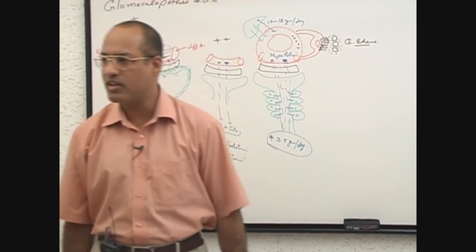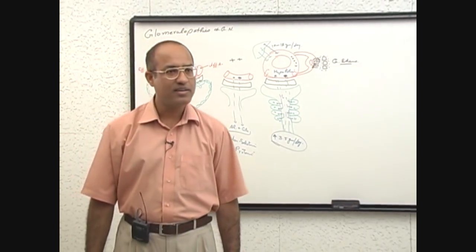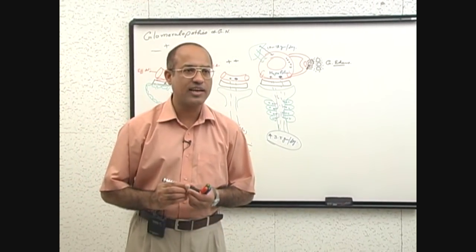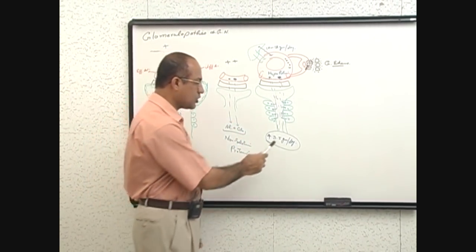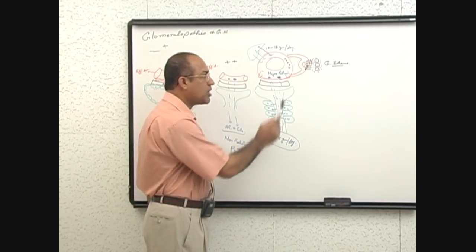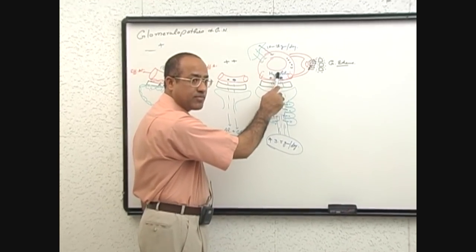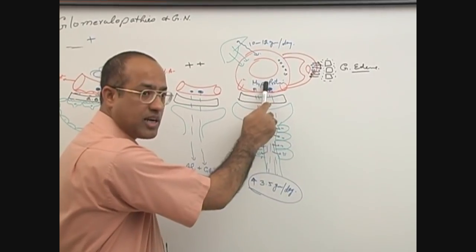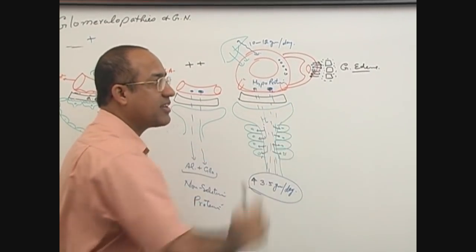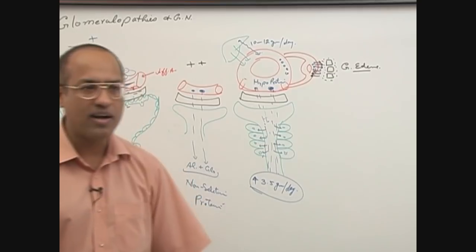Severe generalized edema is called anasarca. You understand that after heavy proteinuria, you develop hypoproteinemia, especially hypoalbuminemia, and that clinically translates into generalized edema.